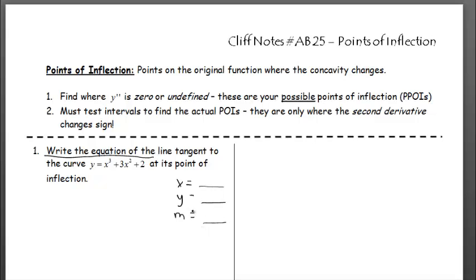So far, we don't have any of these. Typically we're given an x to start with, but you can see the language says 'at its point of inflection.' So we're going to have to find the point of inflection to get x and y, and then we'll find the derivative of y and plug in the x-coordinate of that point of inflection. So I think we have our plan — let's find its point of inflection.